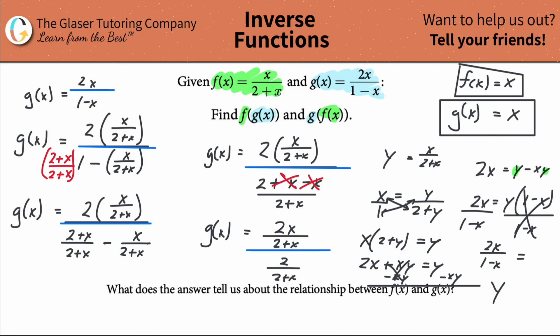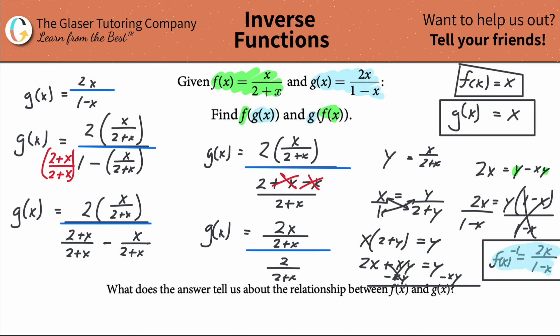Make it look nice and switch the sides. Before we're done, change y to f inverse of x since we found the inverse. So f inverse of x equals two x over one minus x — and that's exactly the same as g of x. We just proved that g of x is the inverse of f of x. Thank you for tuning in. Please subscribe if you can, or hit the like button. Take care.